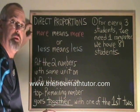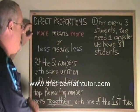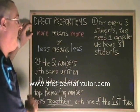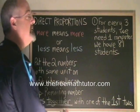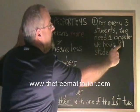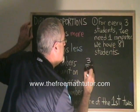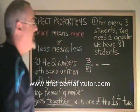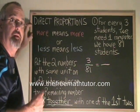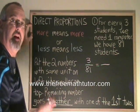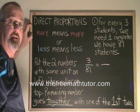For a direct proportion, this is how you build it so that you will be sure to get the right answer. Put the two numbers with the same unit on the left side, smaller number on top. I'm looking at my situation and I see I have two numbers that have students as their unit: three students and 81 students. So I'm putting them together on the left side of my proportion with the smaller number on top. Putting them on the left side is not mandatory — it's just the way I do it to stay organized and make less mistakes.